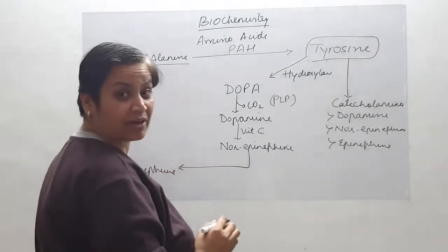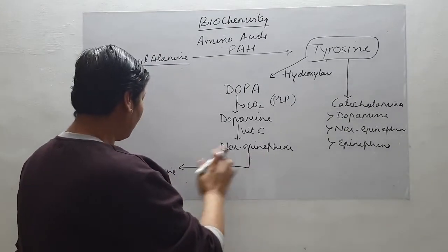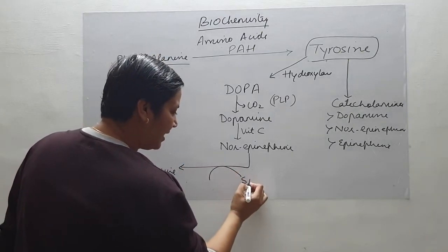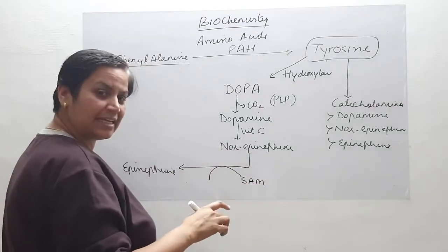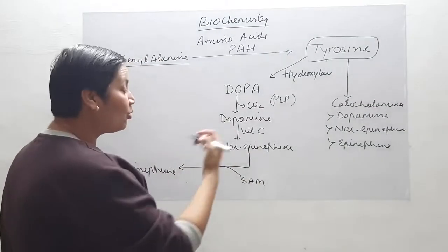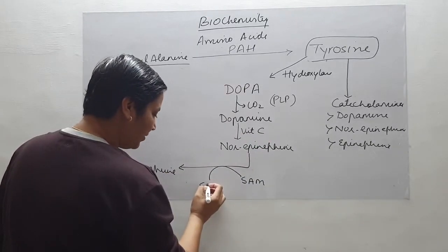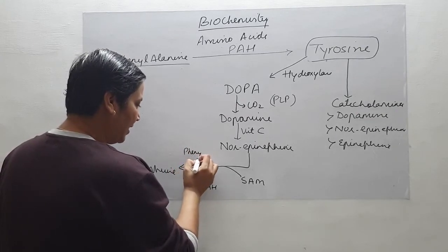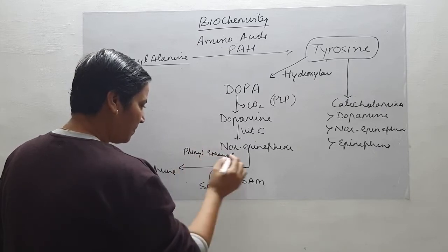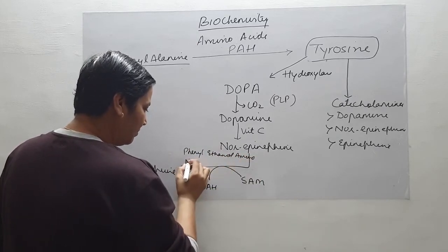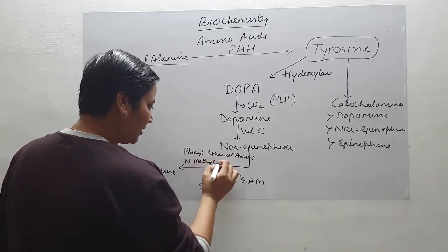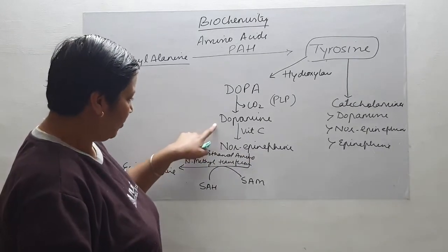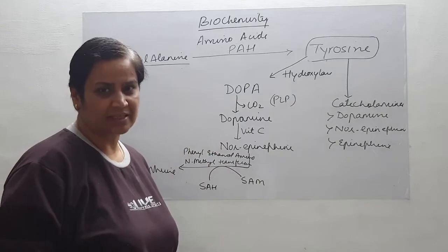If you see the structures of norepinephrine and epinephrine there is only a difference of a methyl group, and the methyl donor here is S-adenosylmethionine. S-adenosylmethionine donates its methyl group to norepinephrine to form epinephrine, and it is converted into S-adenosylhomocysteine. The enzyme here is phenylethanolamine N-methyltransferase, a very important enzyme. This is how the three catecholamines are synthesized.